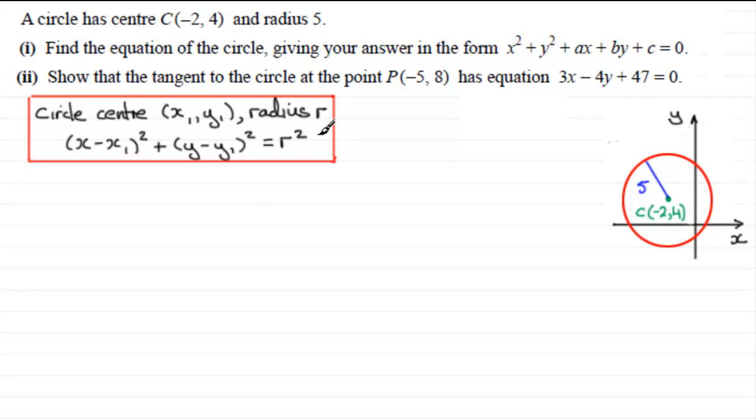So all we need to do is substitute our values into this equation. Therefore, the equation of circle is, it's going to take the form x minus the centre x coordinate, which is -2, x - (-2) all squared, plus y - y₁, which is the 4 here, that's all squared, equals the radius squared, and the radius was 5, so that's 5² or 25.